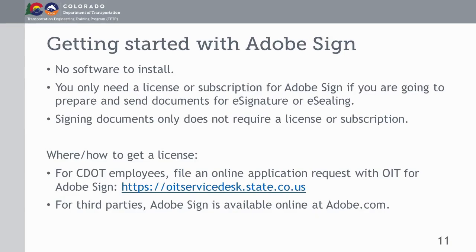To get started, there is no software to install if you're only going to sign documents. If you're a recipient — which is what Adobe Sign calls someone who signs — you don't need any software. All you need is internet access and a smart device: a cell phone, tablet, or computer. You'll receive the document via email. You only need a license or subscription to Adobe Sign if you're actually preparing a document for signature and routing.